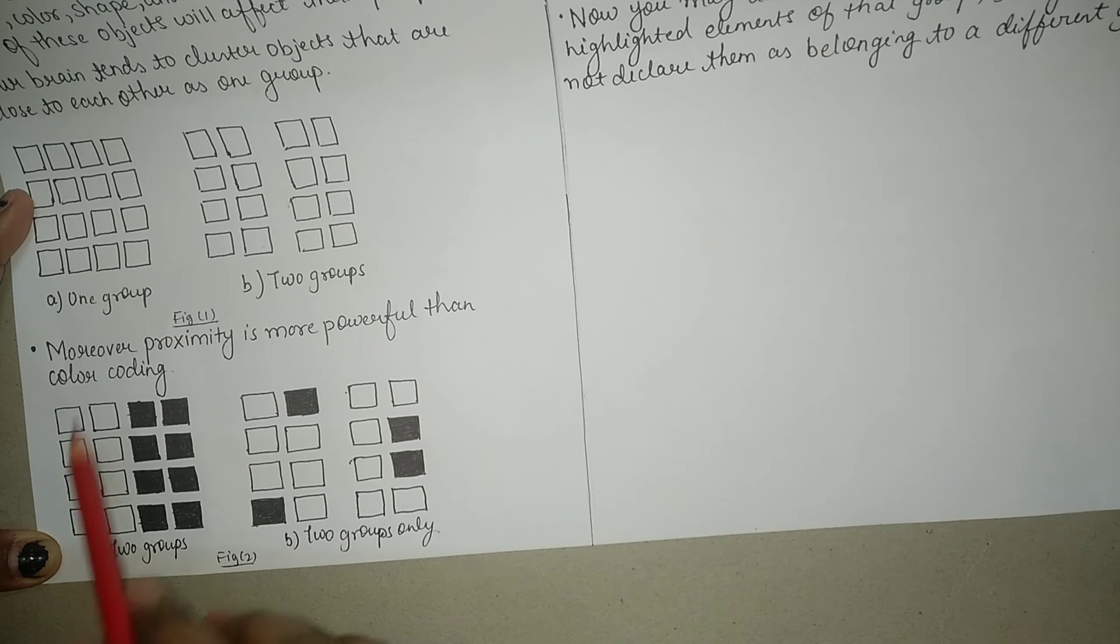So in this case, since these two columns are exactly white and exactly black, then our human eye and human brain can assume that these are two groups, because the entire color has been changed.